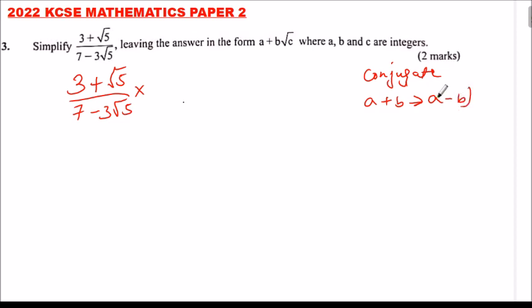When we change the sign, we multiply this by the conjugate of 7 - 3√5. So that will be (7 + 3√5) ÷ (7 + 3√5). This is the conjugate of 7 - 3√5.